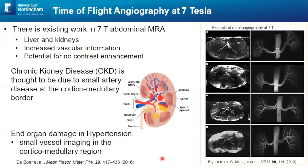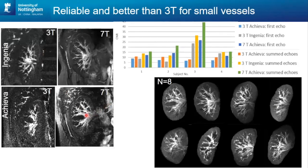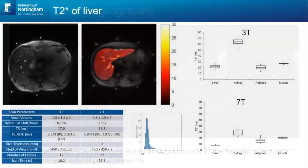We still managed to get results at 7T. We've been doing angiography — at 7T the T1 is longer, so angiography works well. We've been using it to look at very small peripheral vessels affected in acute kidney injury. We used multi-echo data because of the combination of needing long TRs to minimize SAR, high flip angles optimized per subject from B1 maps, and inflow considerations. With that long TR, we collected multiple echoes and summed them to recover signal. We believe you can see more peripheral vessels at 7T than at 3T.